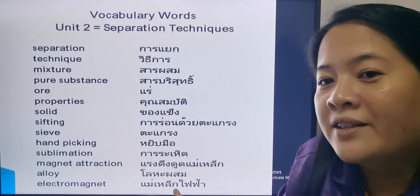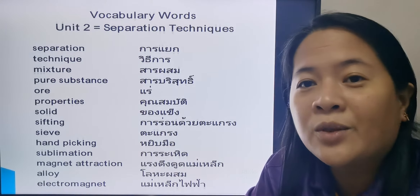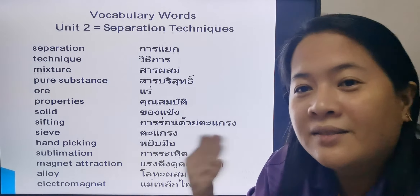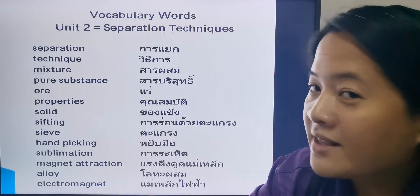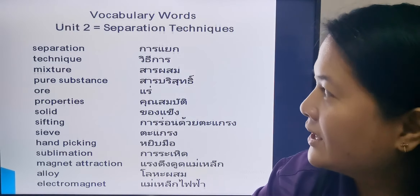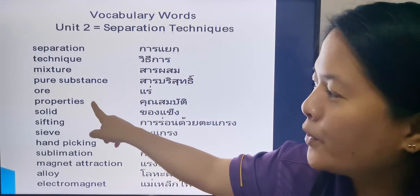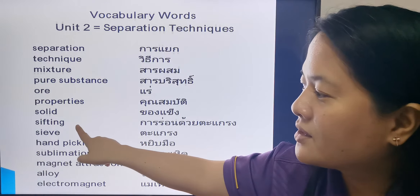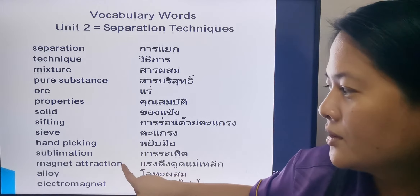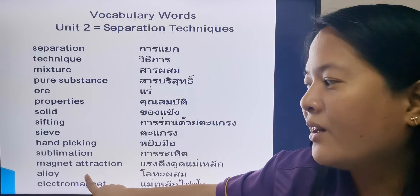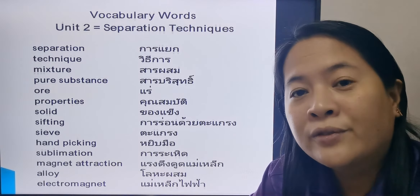These are the vocabulary Thai words. But if it's not exactly what it meant — because you know when you're studying it with the Thai teacher — it's from Google Translate so I'm not really sure. So the first word is separation, then technique, then mixture, pure substance, ore, properties, solid, sifting, sieve, hand-picking, sublimation, magnet attraction, alloy, and electromagnet. This vocabulary is only for the first two lessons.